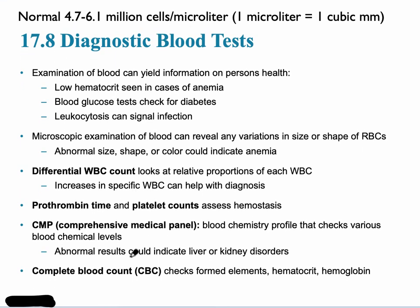Common blood tests done in the hospital include the differential white blood cell count, which identifies the possible reason for increased white blood cells — specific to neutrophils, lymphocytes, monocytes, eosinophils, or basophils. Prothrombin time or platelet count tests how well hemostasis is occurring. Most commonly, a complete blood count (CBC) checks for formed elements — red blood cells, white blood cells, and platelets — as well as the hematocrit and hemoglobin.